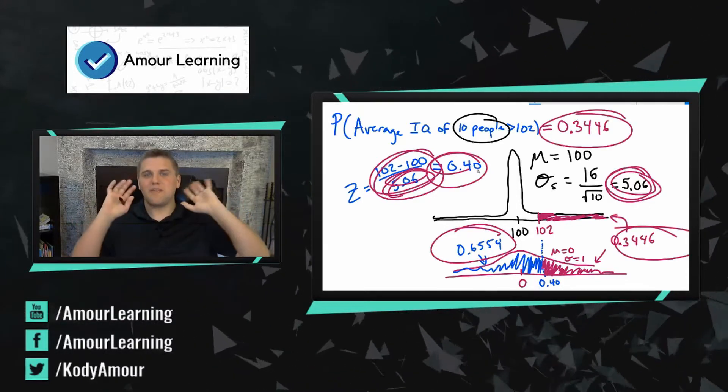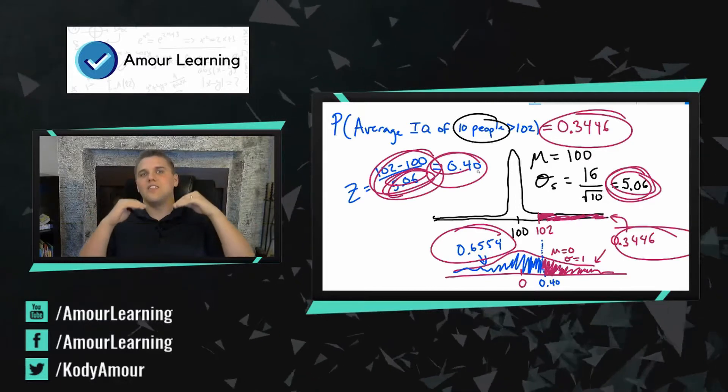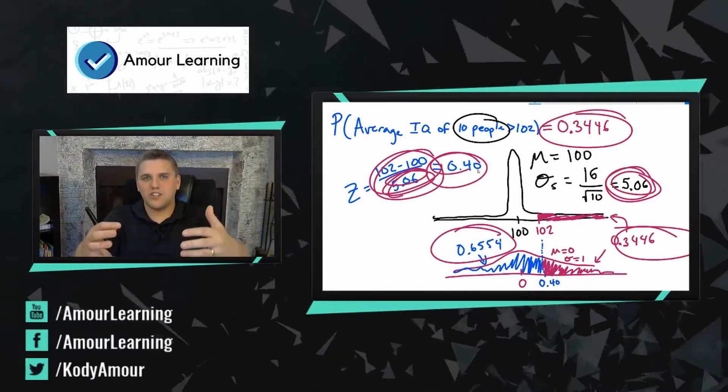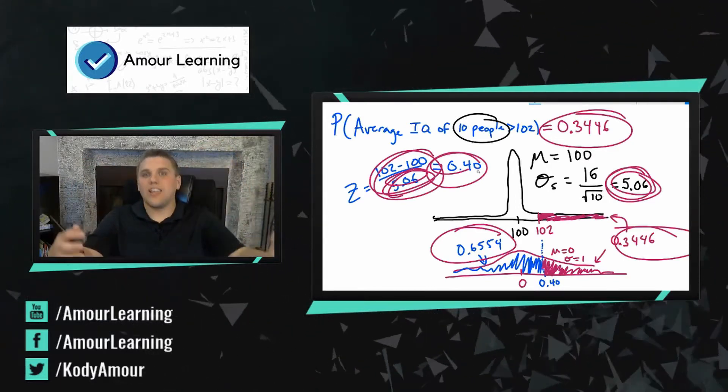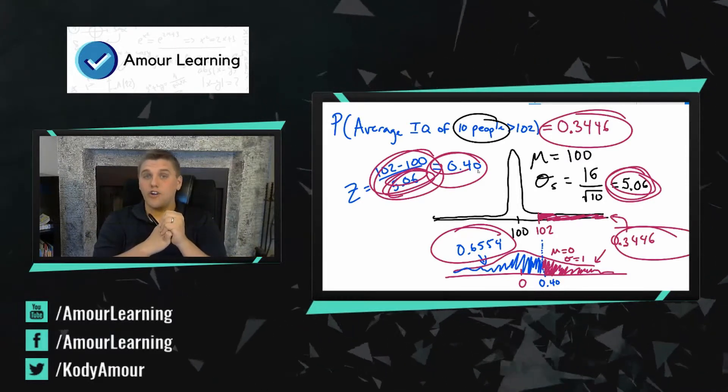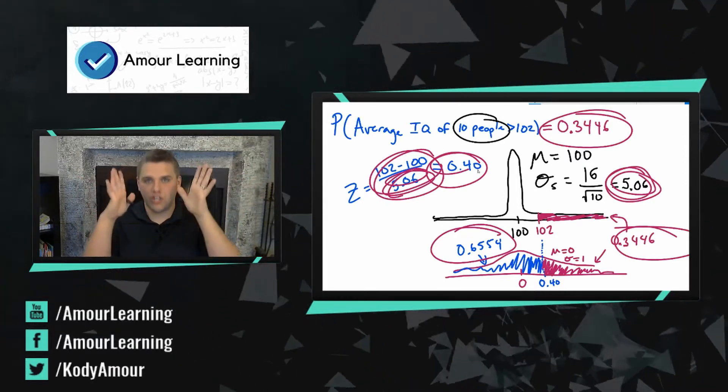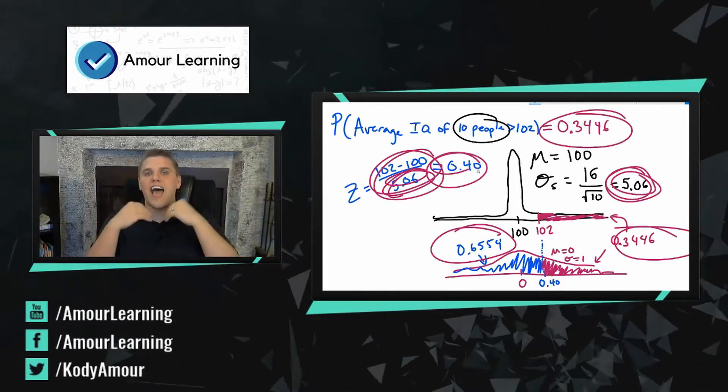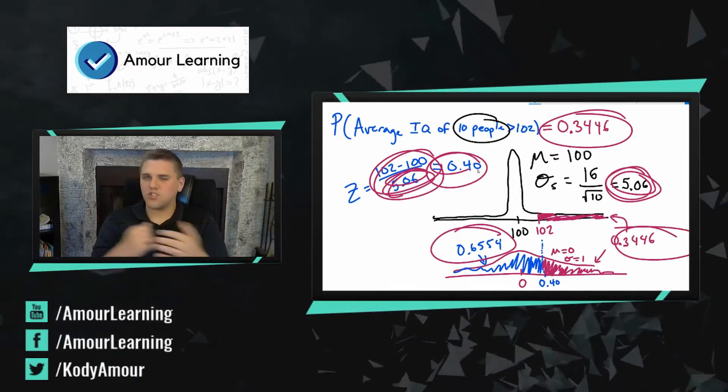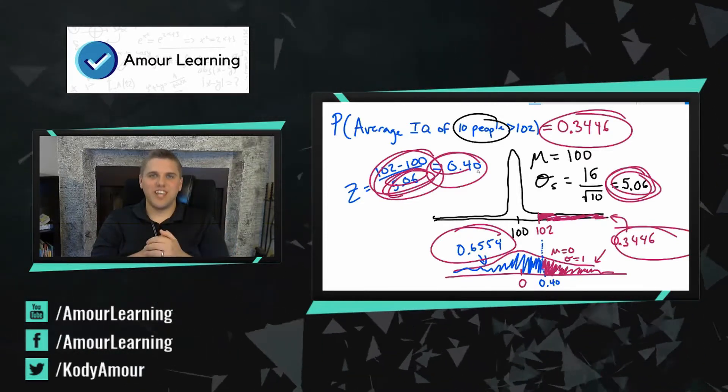There's a lot going on there, but the idea is that the more people you add to your sample, the more unlikely it is to get an average greater than 102, because your averages should get closer and closer to 100 as your sample size gets bigger. Most likely. Thank you guys so much and I'll see you in the next video.